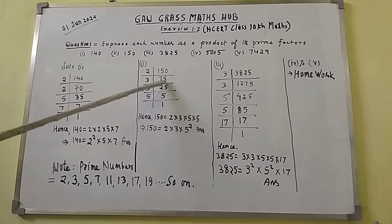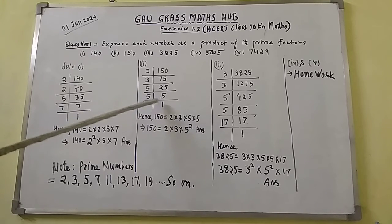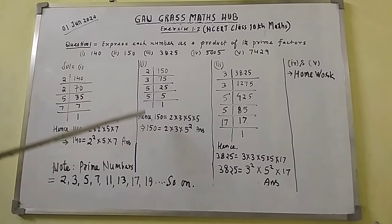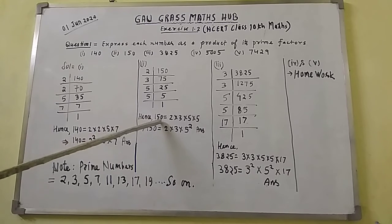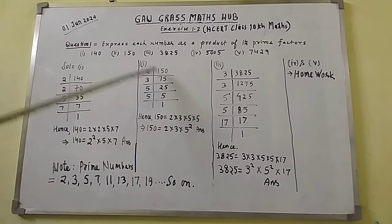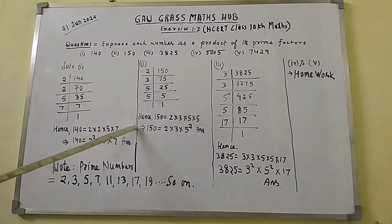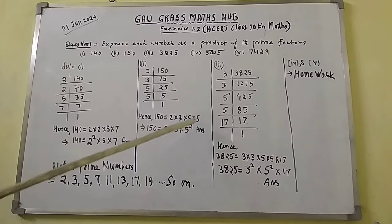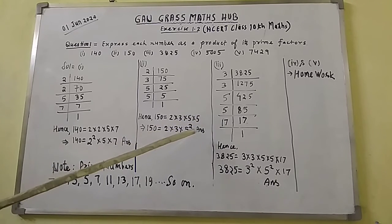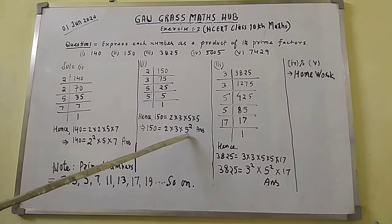Now 75 cannot be divided by 2, but it can be divided by 3. The result is 25, and 25 × 3 = 75. Then 5 × 5 = 25, and 5 × 1 = 5. Hence, the prime factors of 150 give us 2 × 3 × 5 × 5. Since 5 has come twice, you can write 5². So the answer is 2 × 3 × 5².